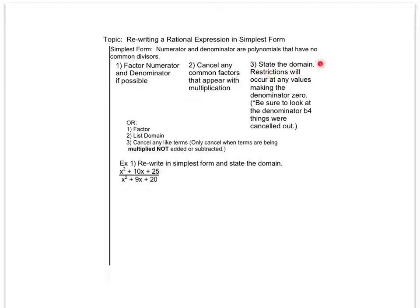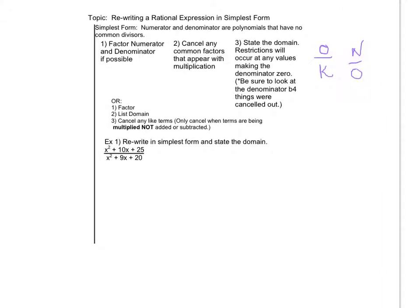Then we're going to state the domain. So when we state the domain what we're going to look at is being sure to list anything that will make the denominator zero because it's okay to have zero on top but it's not okay to have zero on the bottom. So we're going to list those as restrictions. Now we're going to look at how x can be anything except specific numbers. One thing to remind you of is that we have to look at the denominator before things were canceled out.